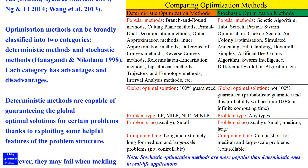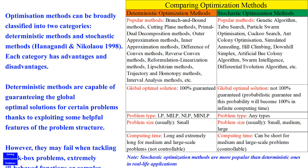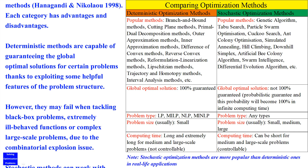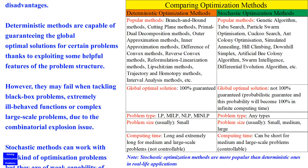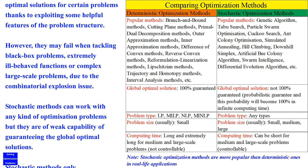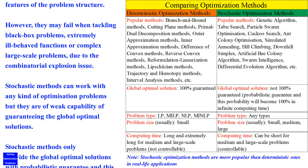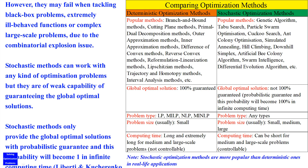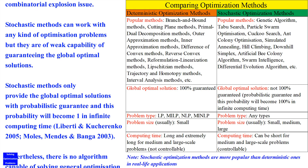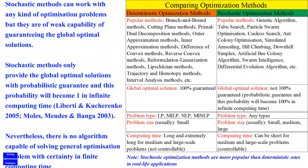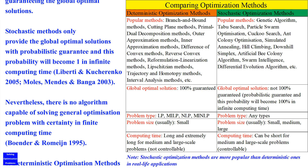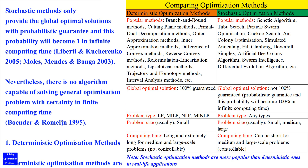Deterministic methods are capable of guaranteeing the global optimal solutions for certain problems, thanks to exploiting some helpful features of the problem structure. However, they may fail when tackling black box problems, extremely ill-behaved functions, or complex large-scale problems due to the combinatorial explosion issue. Stochastic methods can work with any kind of optimization problems, but they have a weak capability of guaranteeing the global optimal solutions. Stochastic methods only provide the global optimal solutions with probabilistic guarantee, and this probability will become one in infinite computing time. Nevertheless, there is no algorithm capable of solving a general optimization problem with certainty in finite computing time.